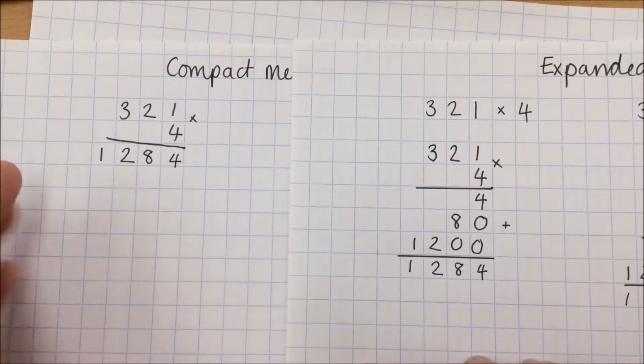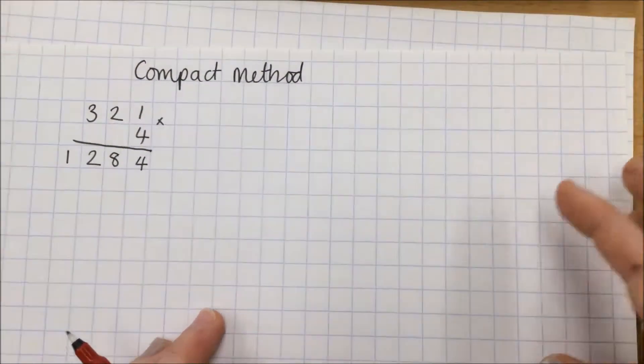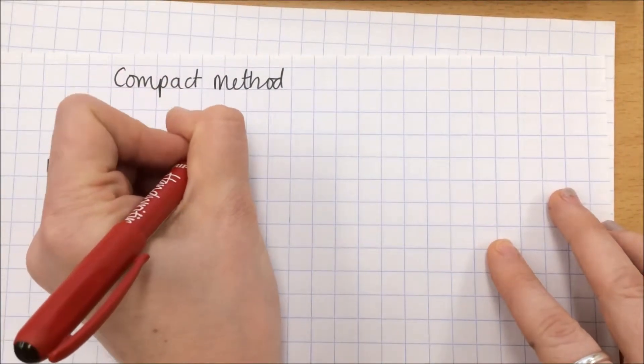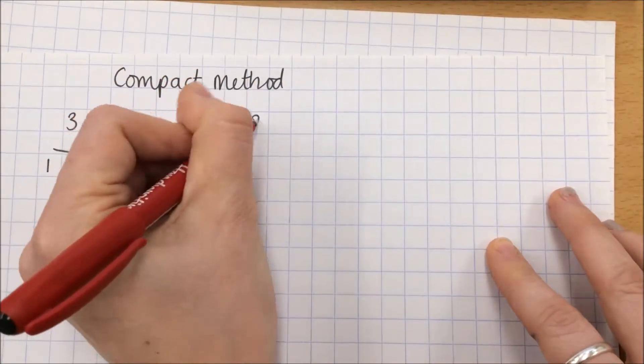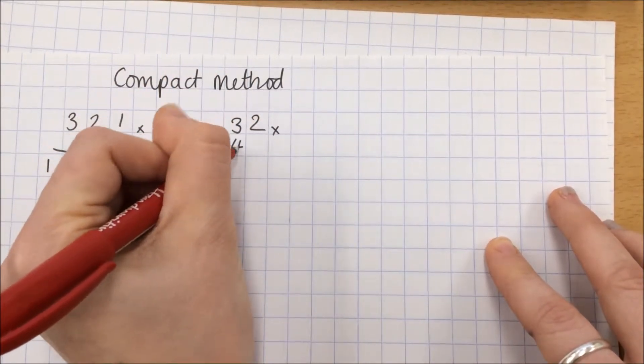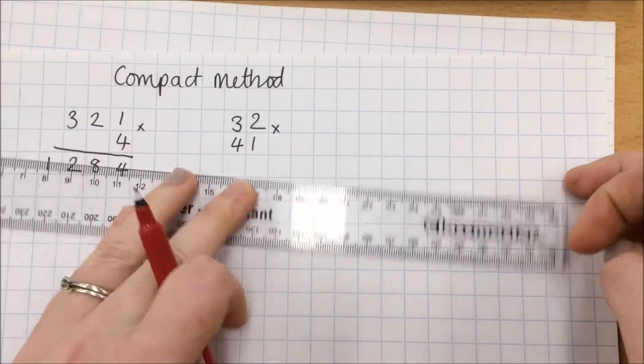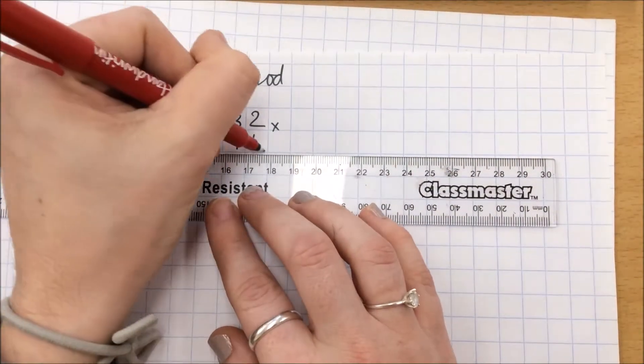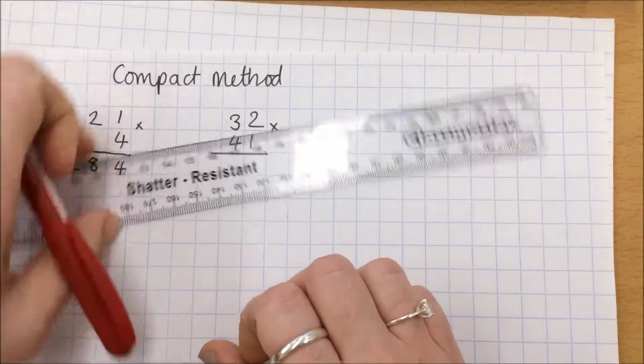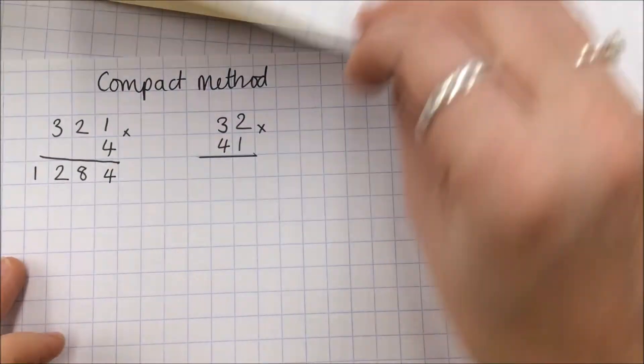We can now do the same, just move that one out of the way, with 32 multiplied by 41. Remember to use a ruler this time.